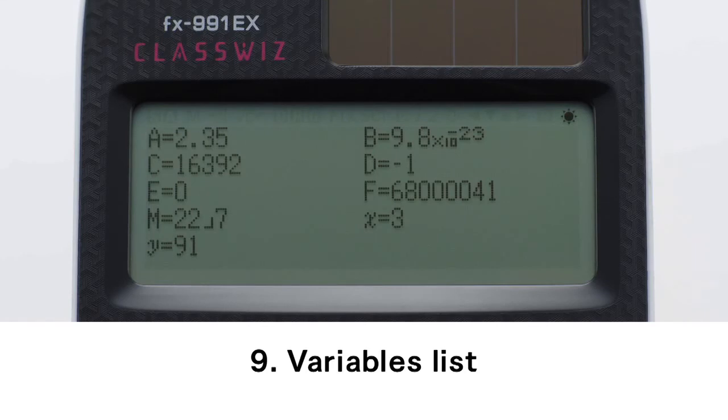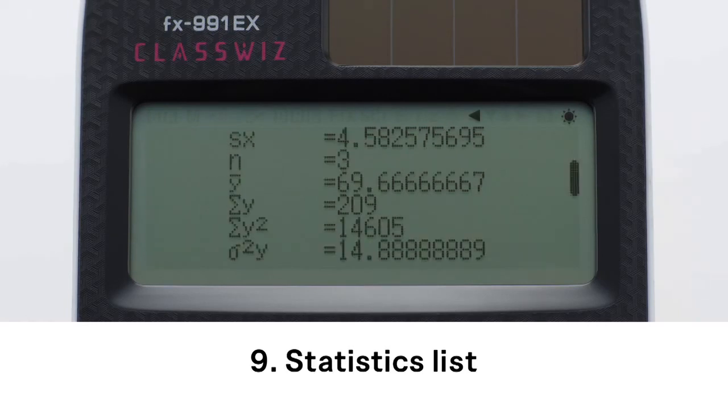Variables list. One-touch list display. Press the recall key to show the values currently assigned to A, B, C, D, E, F, M, X, Y. In statistics, display six rows at once.